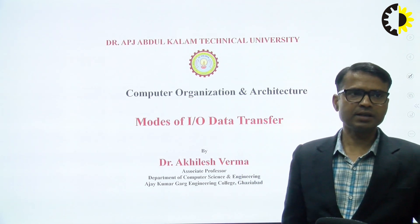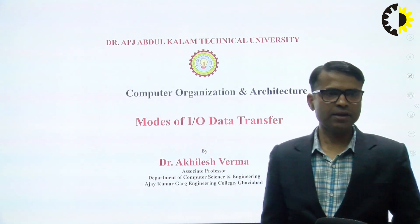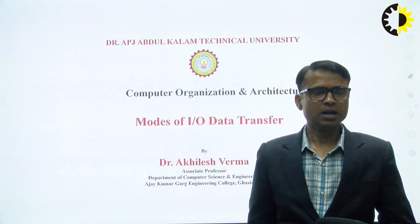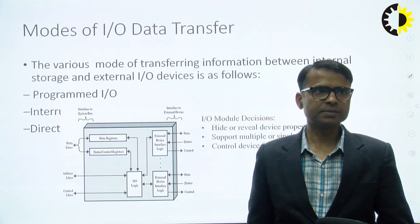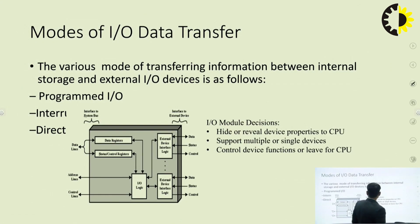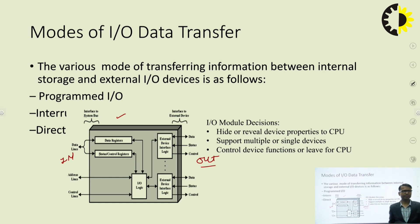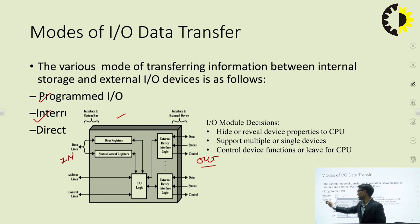Previously, we have discussed about the IO interface design. Within the IO interface design, various modes are there for taking data from the interface. The IO interface has two ends — inside the CPU and outside the CPU or outside world end. IO data transfer happens in three different modes: programmed, interrupt, and direct memory access.